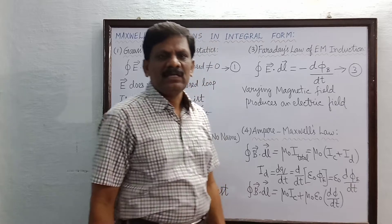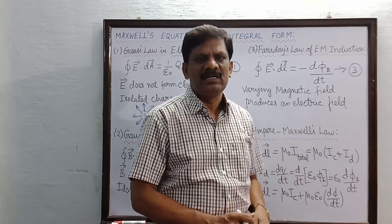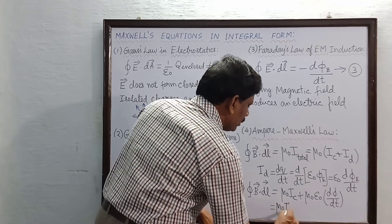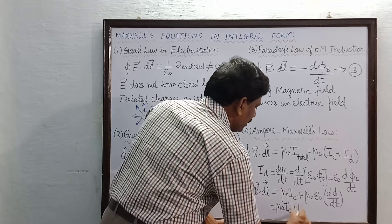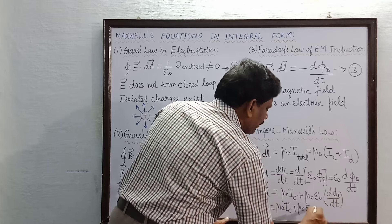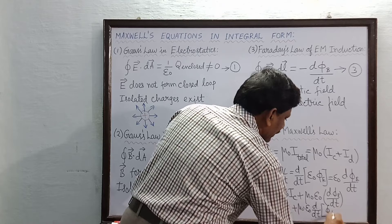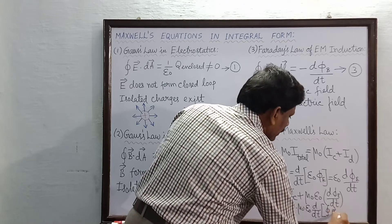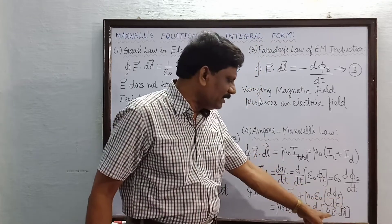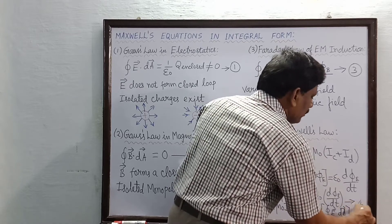This is the actual equation, but in some books one more step is given. This is also equal to mu naught times conduction current I_C, plus mu naught times epsilon naught times D phi E by DT, which can be written as D by DT of the integral E dot dA. Phi E is nothing but the closed integral E dot dA. This is equation 4.